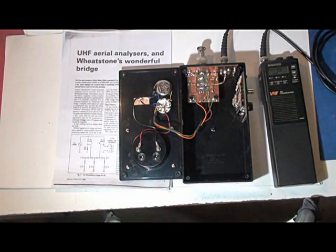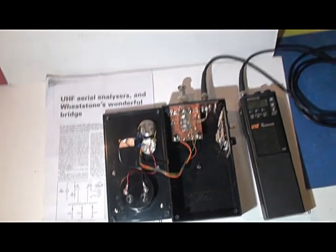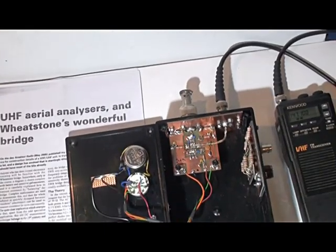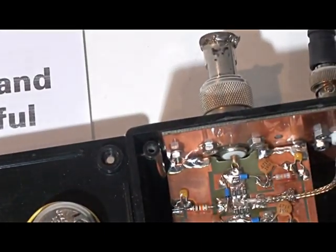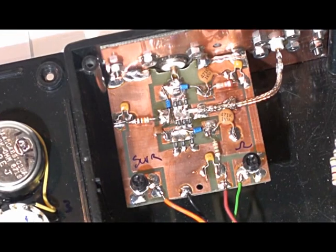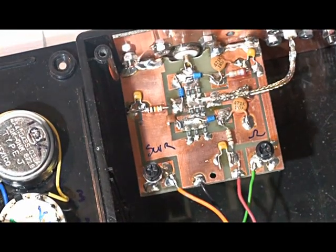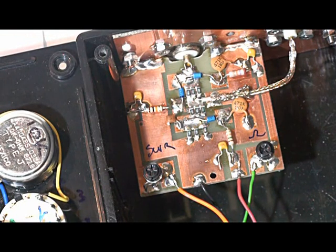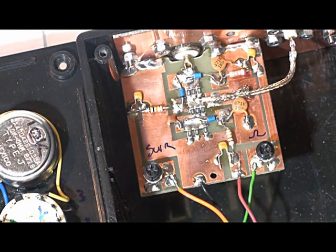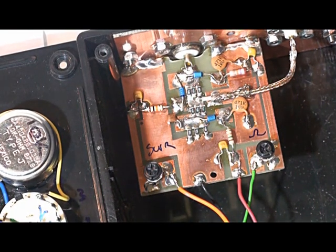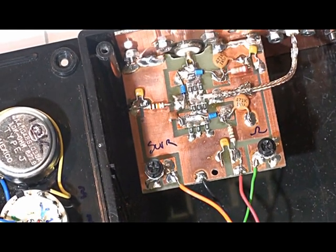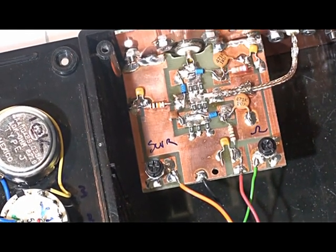I'll zoom down onto the circuit board and you can have a bit of a look at that. It's pretty basic. As I said, you can build it very simply. Doesn't cost a lot of money. Without the meter and the case, you're probably not looking at more than about $10, $15 really. It's much cheaper than a commercial unit and I'm extremely happy with its performance.